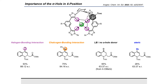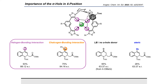We also tested a methoxy and methyl group in the four position. The quinoline with the tellurium in the four position could provide an enantiomeric ratio in the same range as the model substrate with the iodine in this position, while the other two groups provided significantly lower results in terms of enantiomeric ratio.